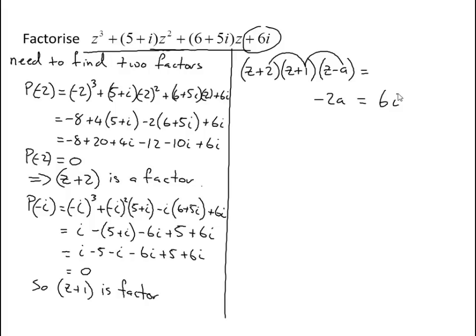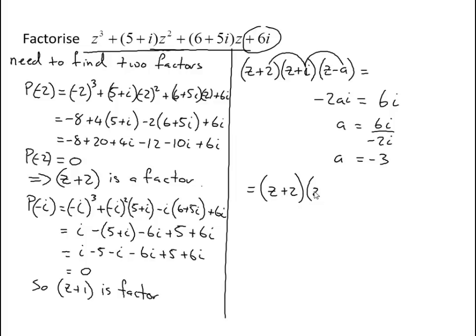What's that going to tell me? Well, a is going to equal 6i divided by minus 2i — that should be 2ai — so 6i divided by minus 2i gives a equals minus 3. So my factors are z plus 2, z plus i, and z minus (minus 3), which is z plus 3. And there are my three factors.